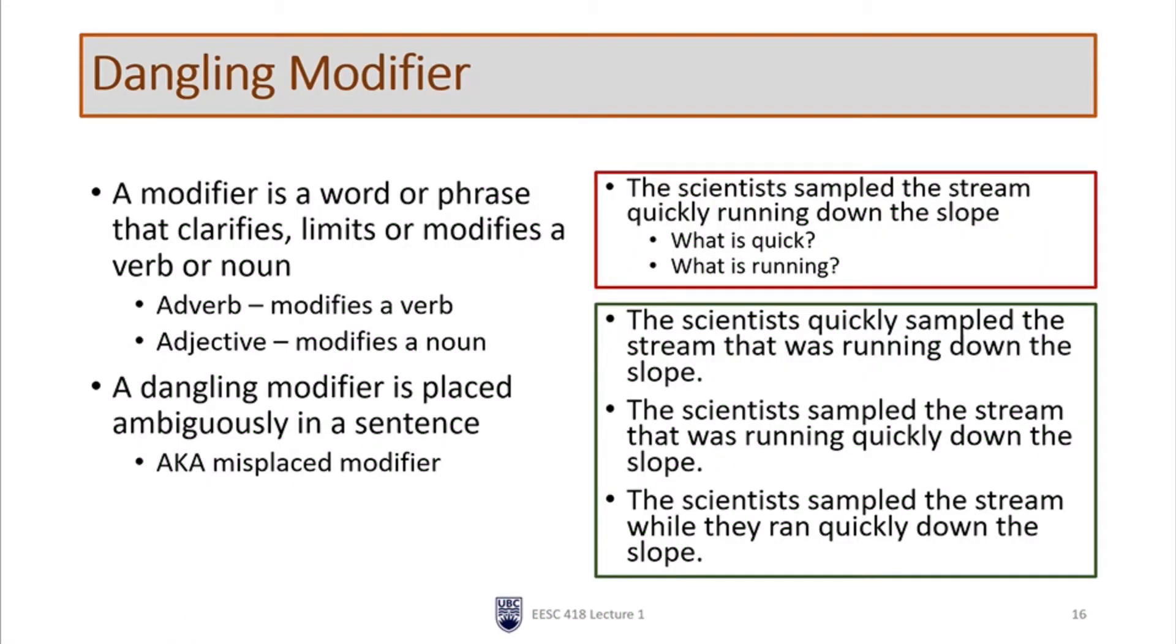Often this is an adverb or an adjective. Either way, it's something that makes your verb or noun more specific, is limiting it to some specific attribute, or might be adding some information to it. So in the example I've given here, the sentence says the scientist sampled the stream quickly running down the slope.